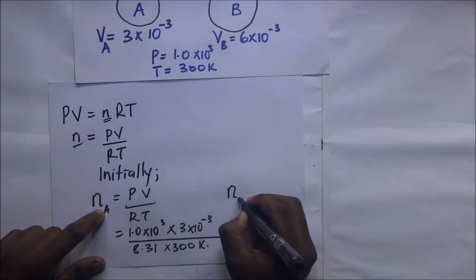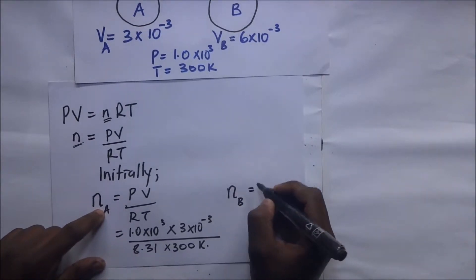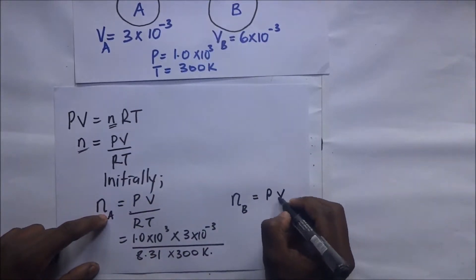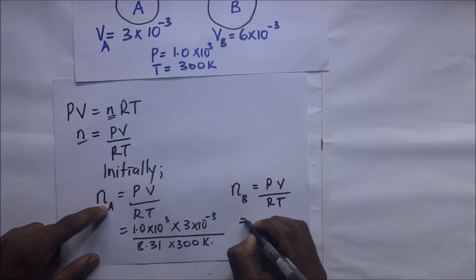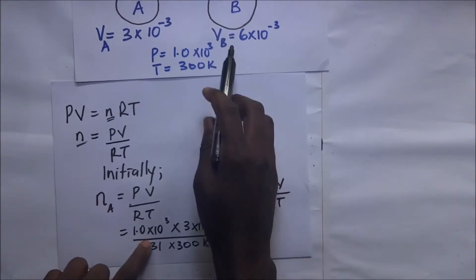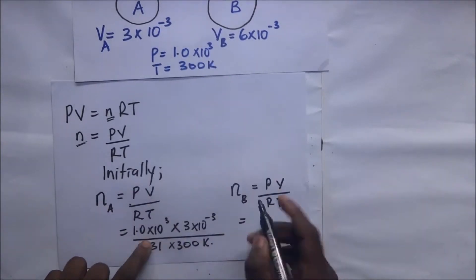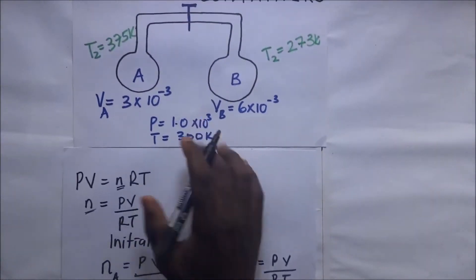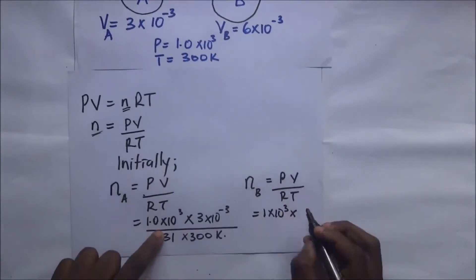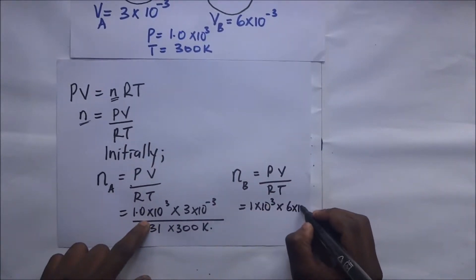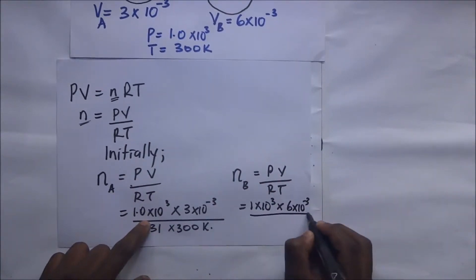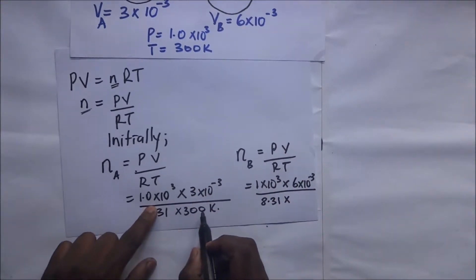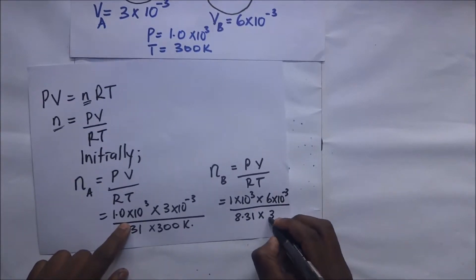Similarly, the initial number of moles in container B is: n_B = PV / RT = (1.0×10³ × 6×10⁻³) / (8.31 × 300). The pressure is the same 1.0×10³ Pa and the initial temperature is 300 kelvin for both containers.